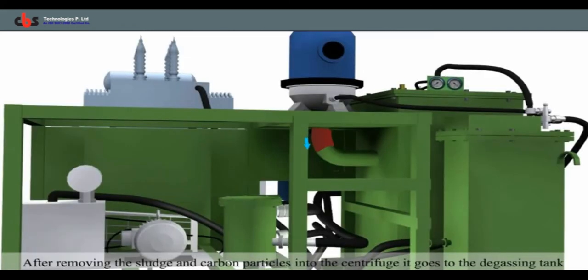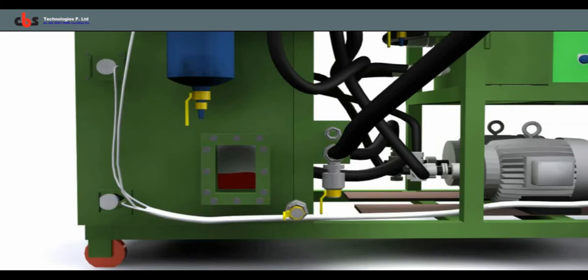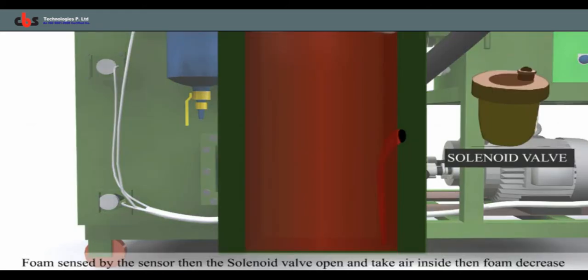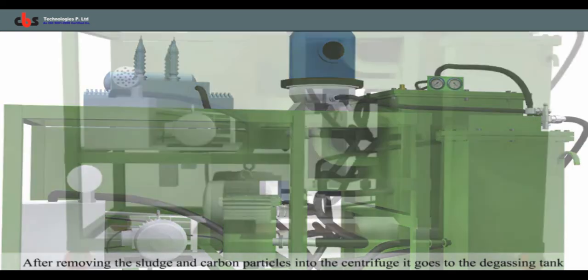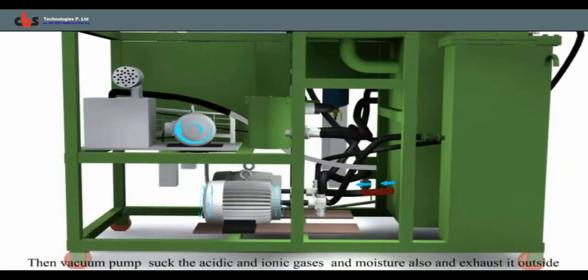Some foam is generated during this. When the foam increases, the sensor senses the foam and opens the solenoid valve attached with moisture trapper, that lets the air enter into the degassing chamber which minimizes the foam. The vacuum pump sucks the acidic and ionic gases and removes it through exhaust.